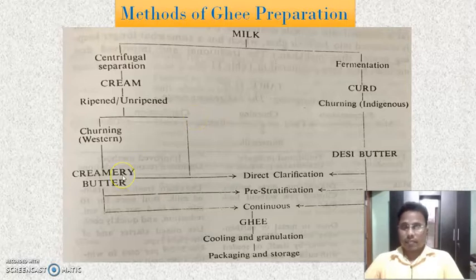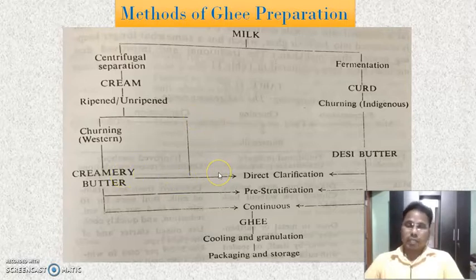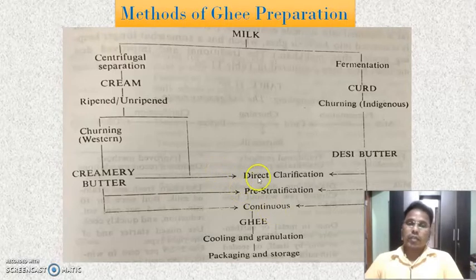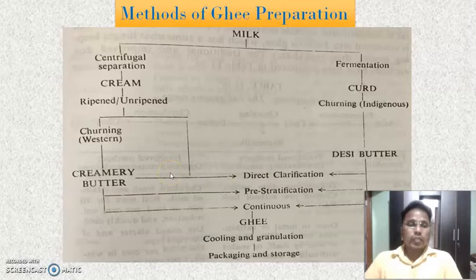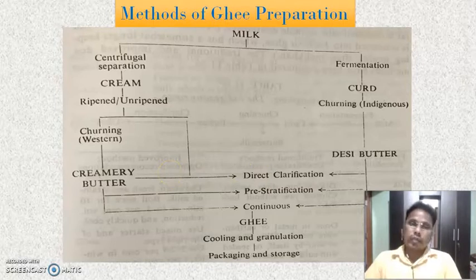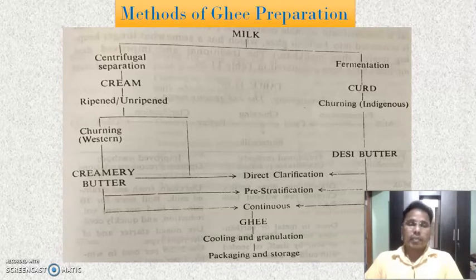The four remaining methods are: the Creamery Butter method, direct clarification method, phrase stratification method, and continuous method. Today we are going to learn in detail about the Creamery Butter method.